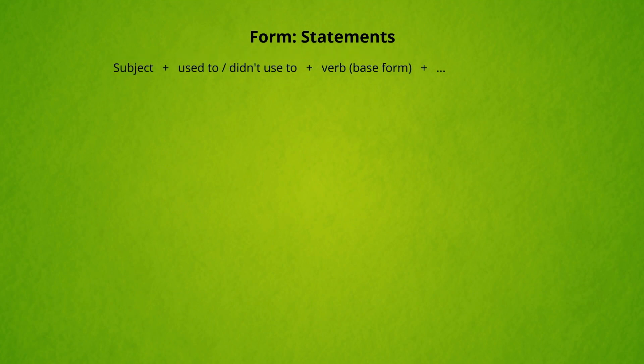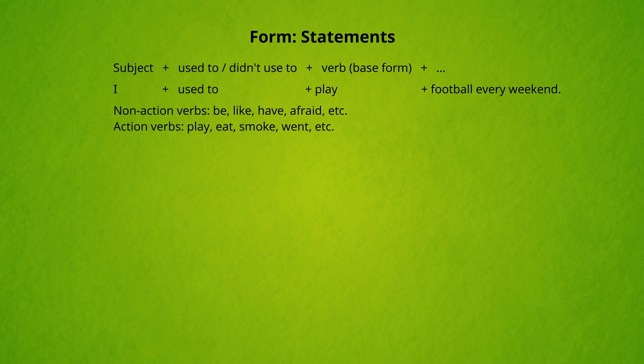The form for 'used to' and 'didn't used to' statements is: subject plus 'used to' or 'didn't used to' plus verb in the base form. For example: 'I used to play football every weekend.' We can use both action and non-action verbs with 'used to.'